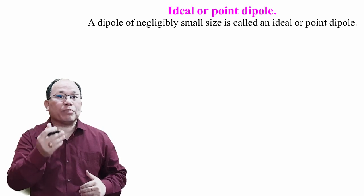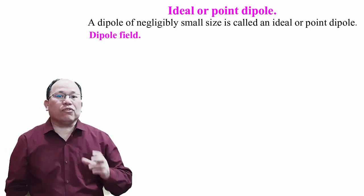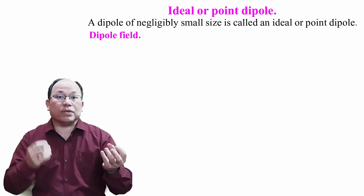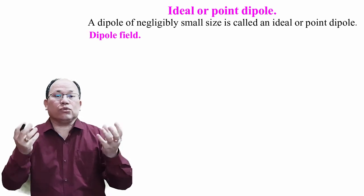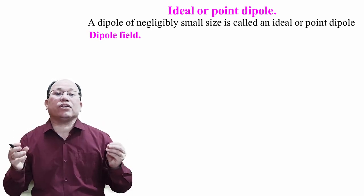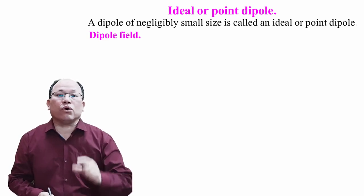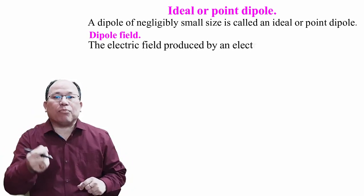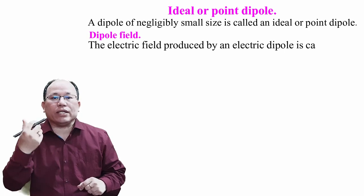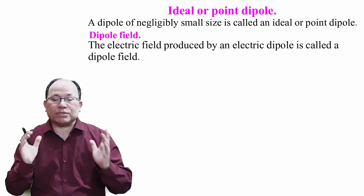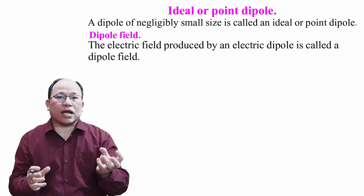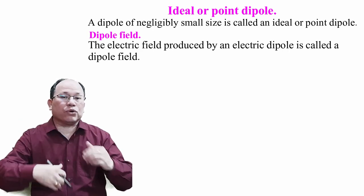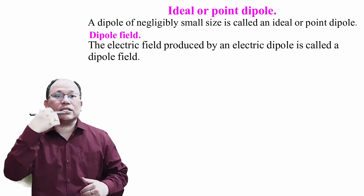Let us come to the next topic: dipole field. If there are two charges —q and +q, then each creates an electric field. The combined field created by both charges is called the dipole field. The electric field produced by an electric dipole is called a dipole field.